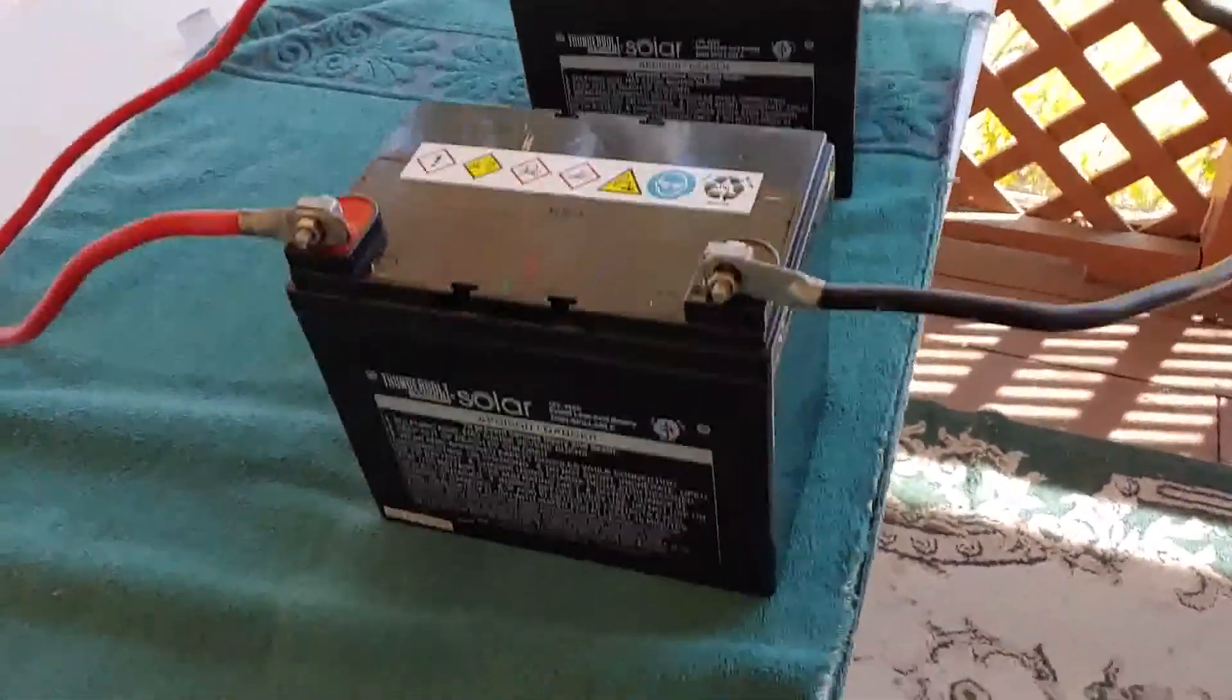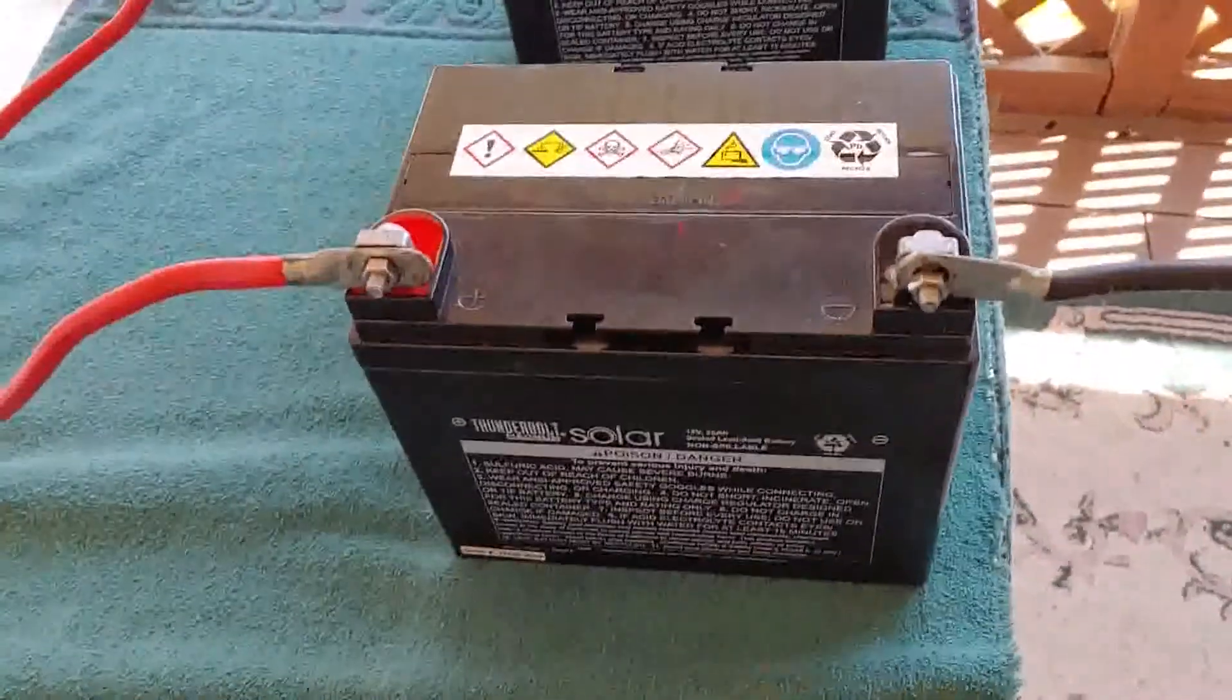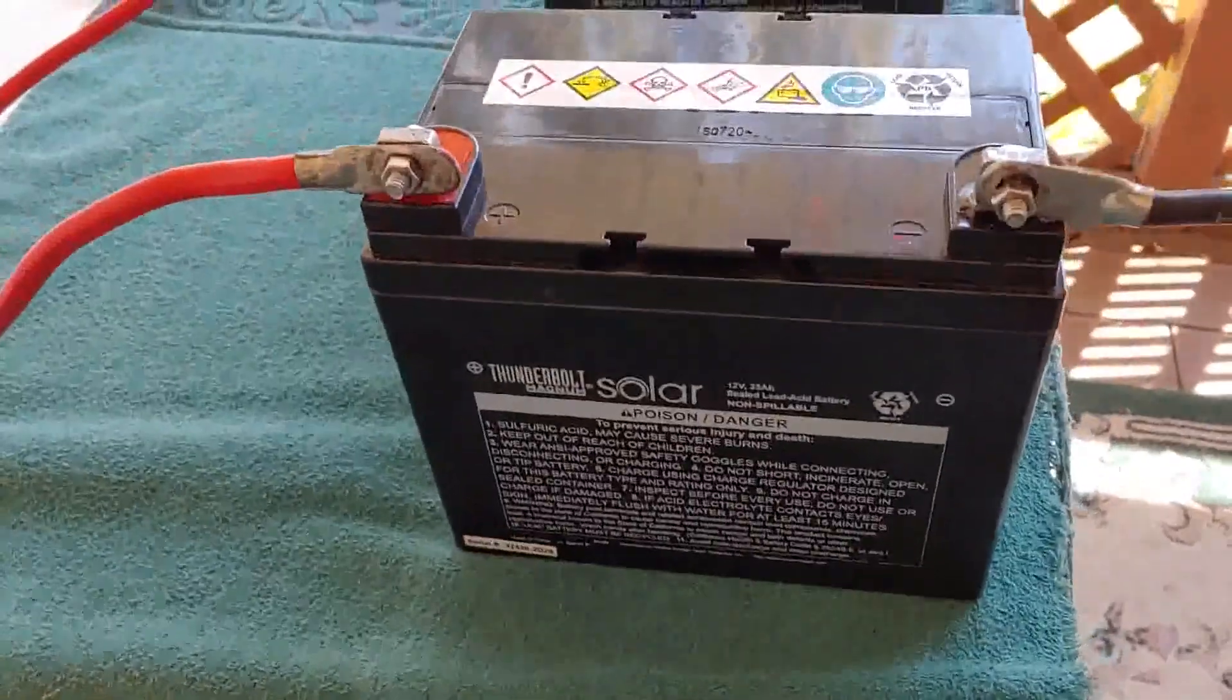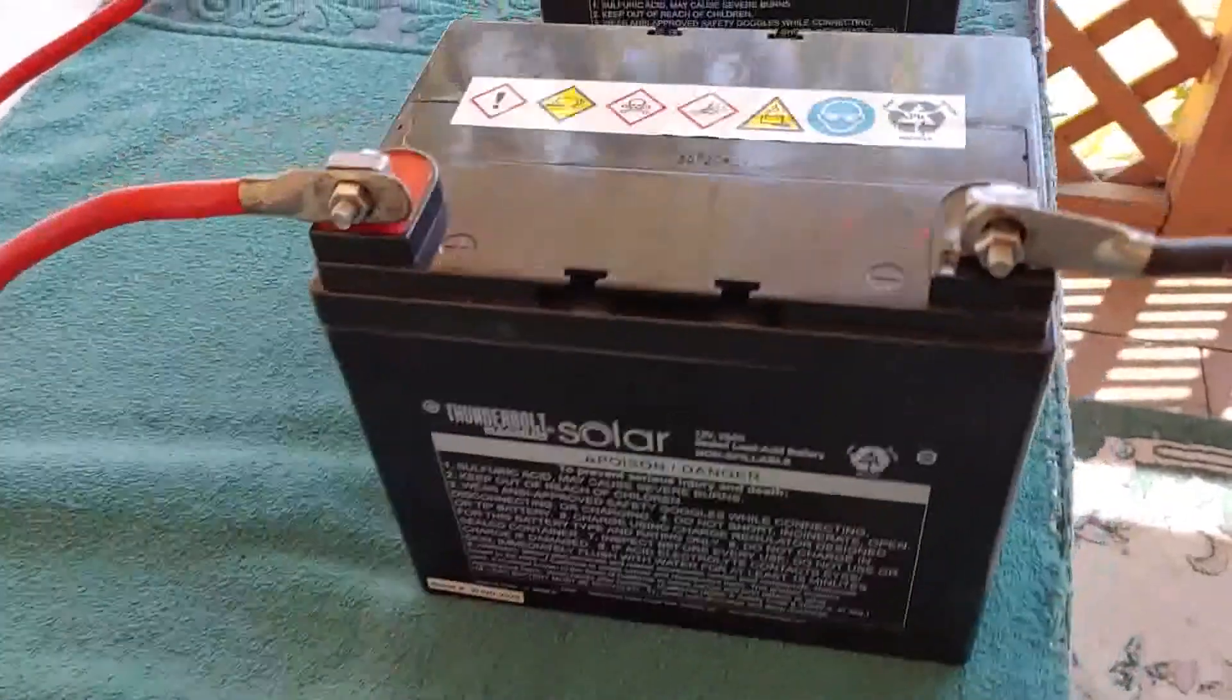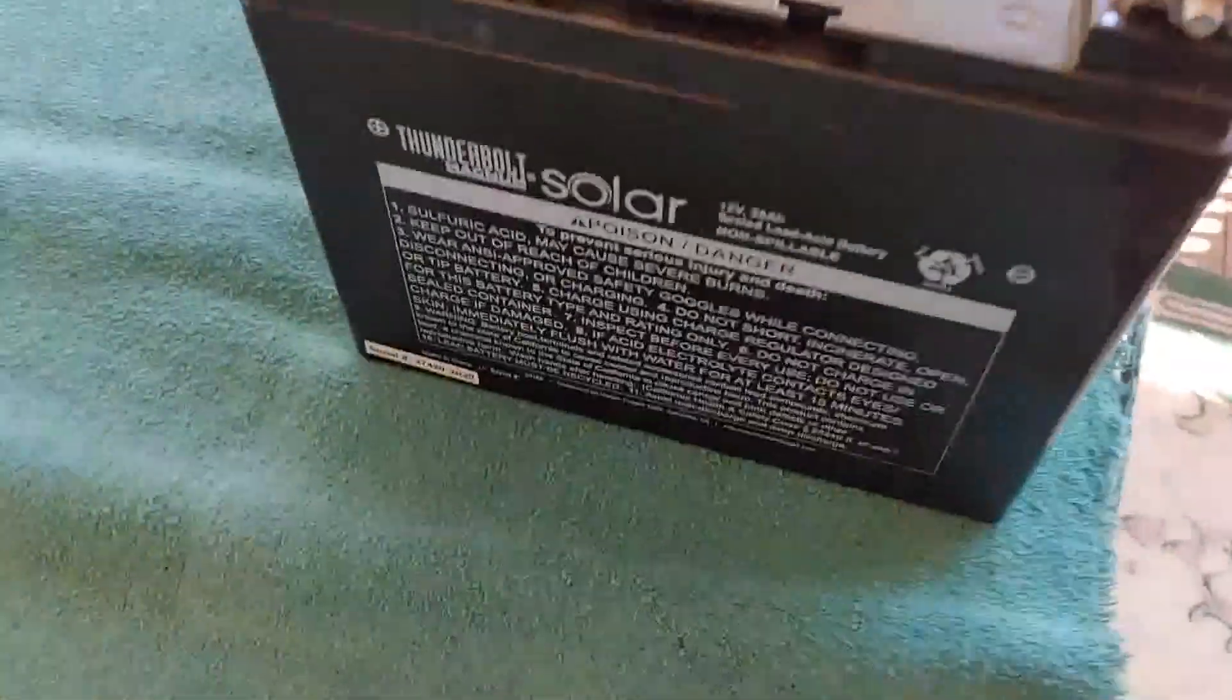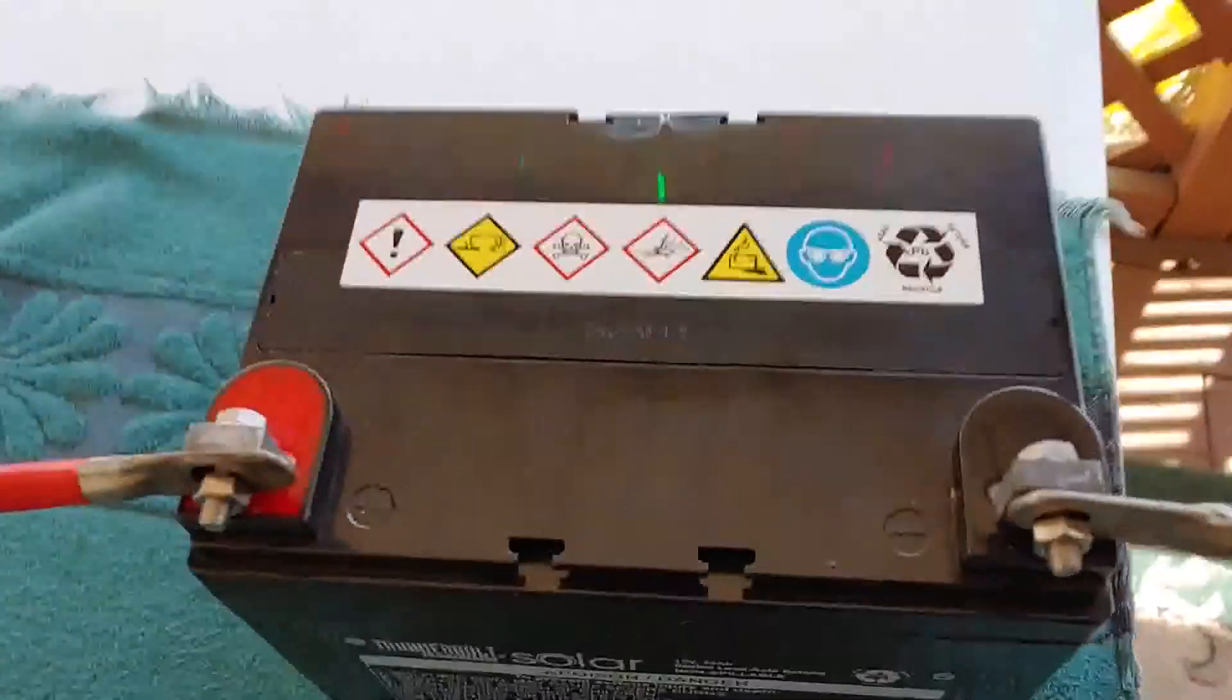So here you can see all around the battery that we've connected. Like I said this is a 12 volt battery. It's a Thunderbolt. I got it from Harbor Freight for about 54 to 58 dollars. You have the positive on top of course, negative. A little different than car batteries. The posts look different. Give you a good look at them. Exactly how they're connected.